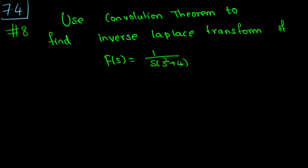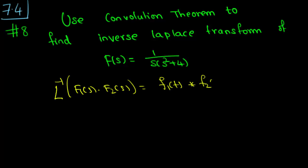The convolution theorem says that the Laplace inverse of F1(s) times F2(s) is the convolution of f1(t) and f2(t), where f1(t) is the Laplace inverse of F1(s) and f2(t) is the Laplace inverse of F2(s).